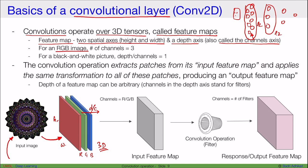For an RGB image the number of channels equals three, but for a grayscale (black and white) picture the depth — the number of channels — equals one. We can put all the RGB channels together into a single input volume, since our input has width, height, and depth.